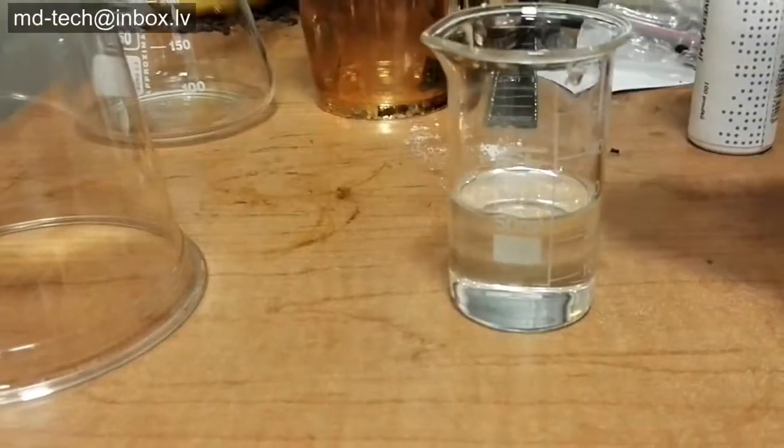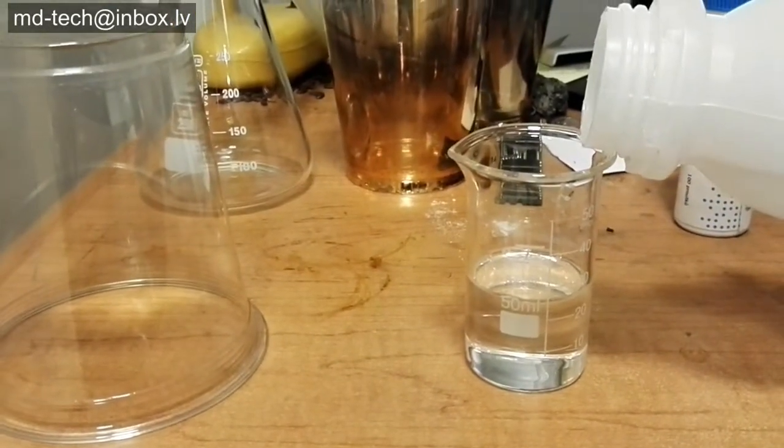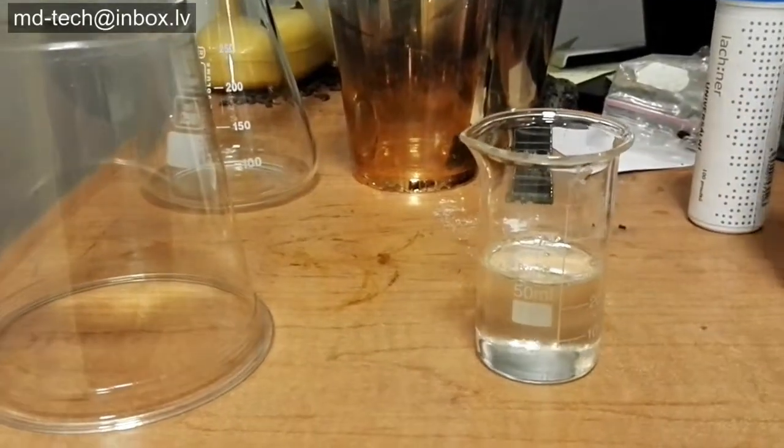Add 3 milliliters of concentrated hydrochloric acid to the test tube. Shake the test tube again to mix the hydrochloric acid into the solution.